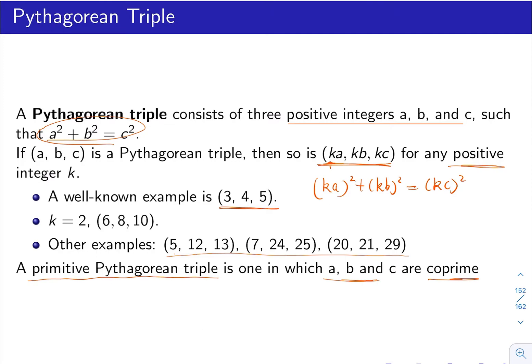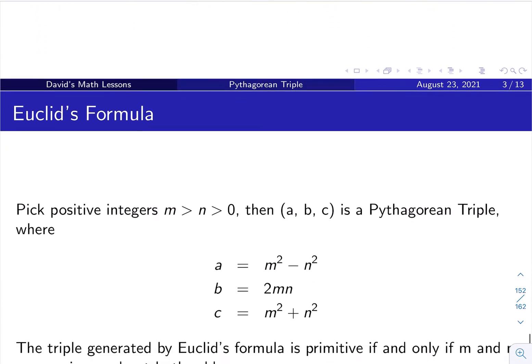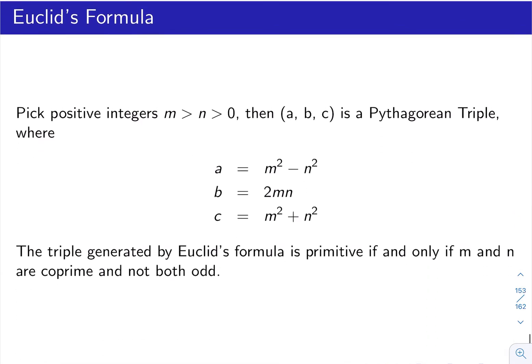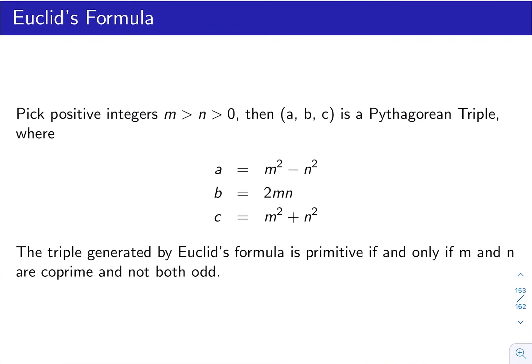Of course, there are infinitely many of them. As a matter of fact, Euclid gives a formula to calculate the a, b, c values from any integers m and n, where m is greater than n.